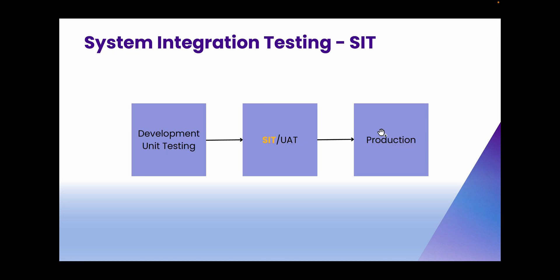Once unit testing is completed, the changes are moved into the SIT system where system integration testing is performed. In SIT, the changes are tested end-to-end including interfaces, data flow, middleware, and the interaction between these various systems.